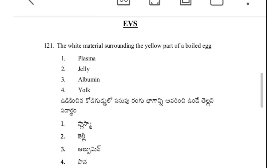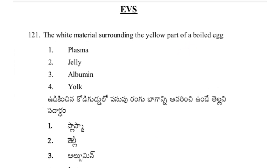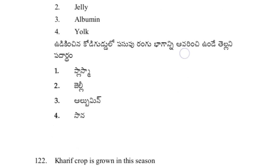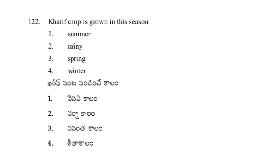Hi everyone, Assalamu Alaikum. Today we will see EBS previous bits. First question: the white material surrounding the yellow part of a boiled egg — answer: albumin, option 3.